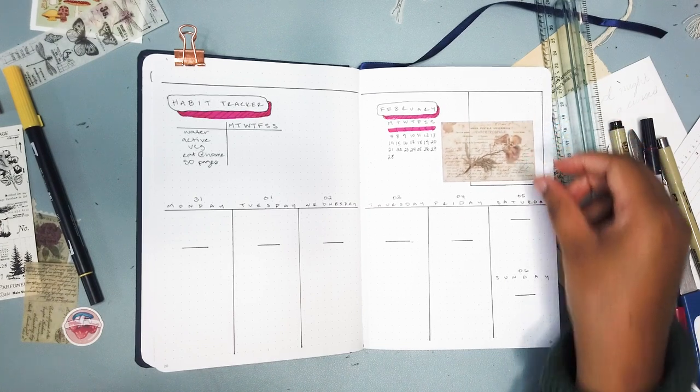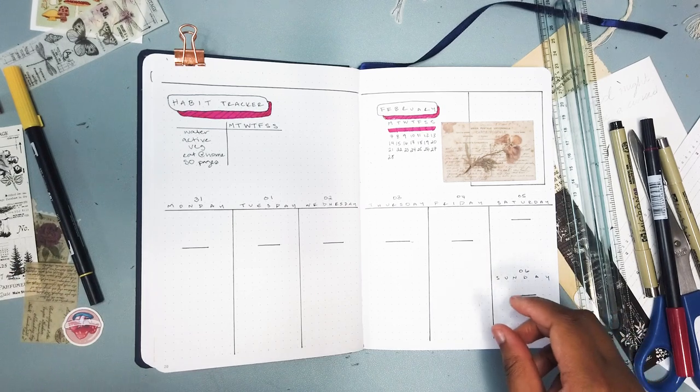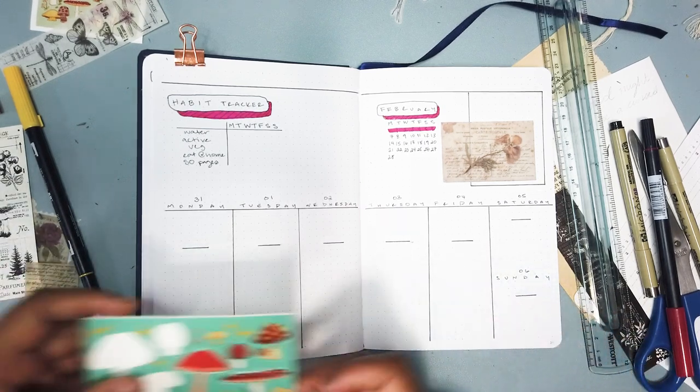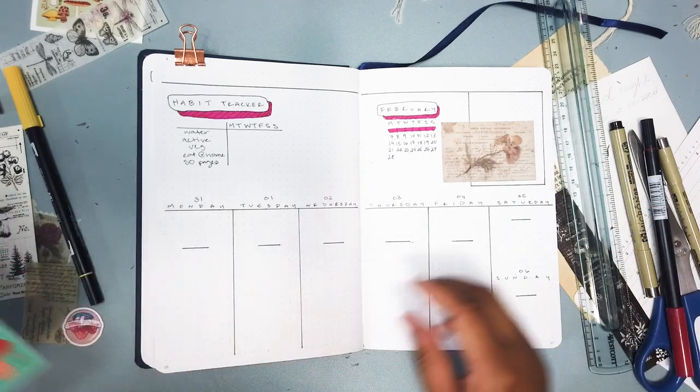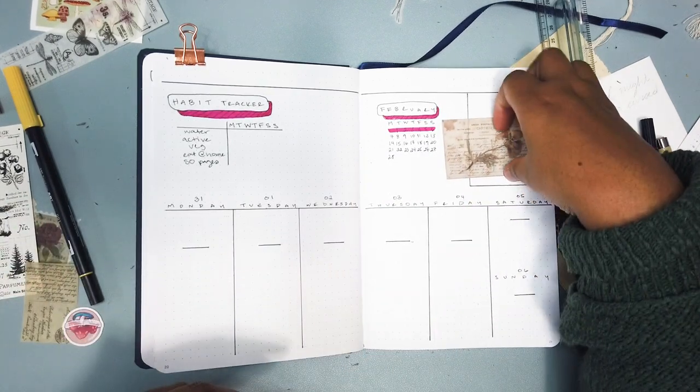I use my habit tracker to track all sorts of things: my water, if I'm active, eating vegetables, eating at home, and working on my world building bible for my space opera.